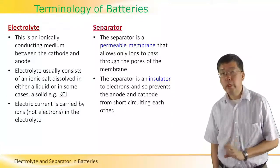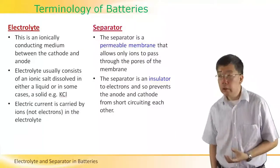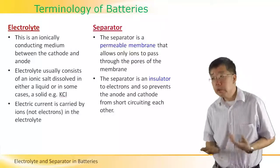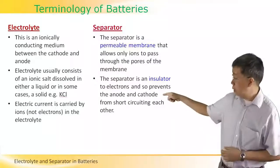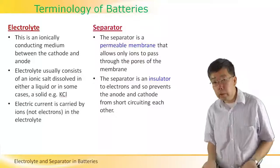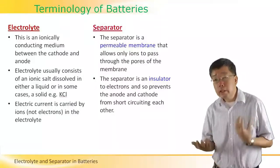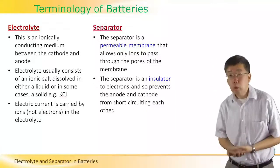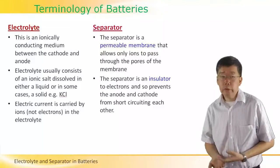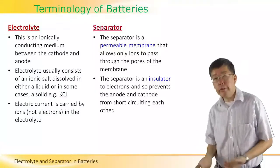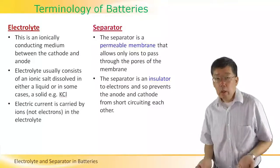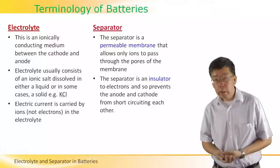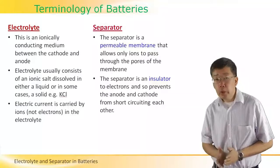By ionically conducting medium, what we mean is that the electrical current is carried not by electrons but by positive and negative ions within the electrolyte. To prepare the electrolyte, we take a salt such as potassium chloride or sodium chloride, which contains positive and negative ions — in potassium chloride, potassium is the positive ion and chloride is the negative ion — and dissolve this salt in a solvent to get an ionically conducting electrolyte.